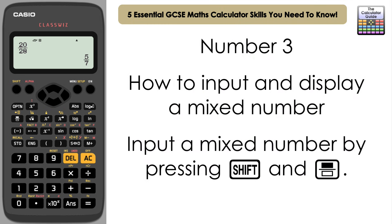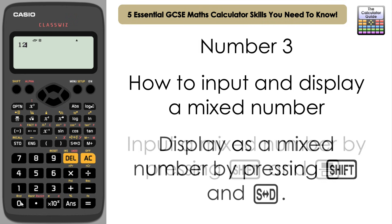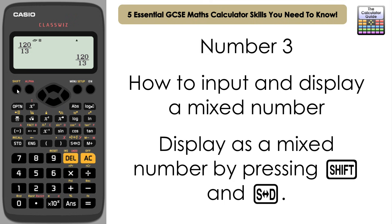The third essential skill is how to input and display mixed numbers. To input a mixed number, press Shift and the fraction button — you can see it's set up to input a mixed number, for example 2 and 2 thirds. In the default setting it will display as an improper fraction. If you already have an improper fraction like 120 over 13, input that and press Shift and the SD button to display it as a mixed number: 9 and 3 thirteenths.